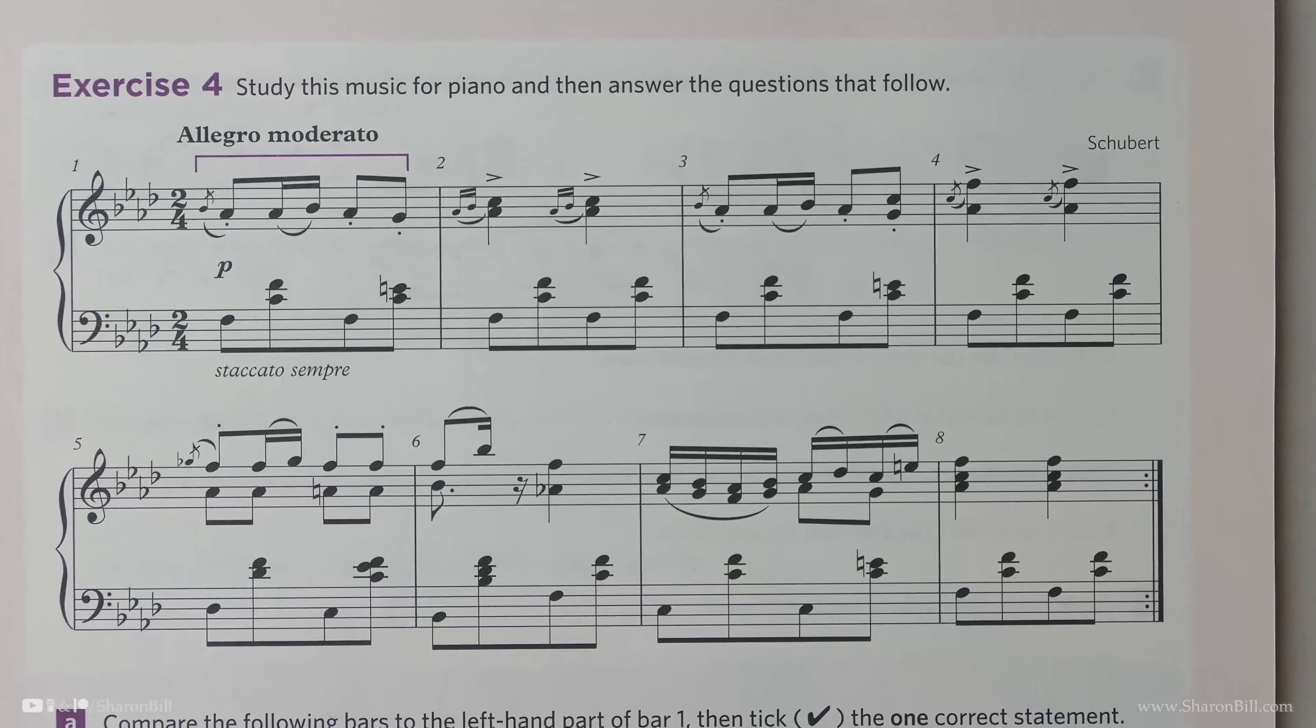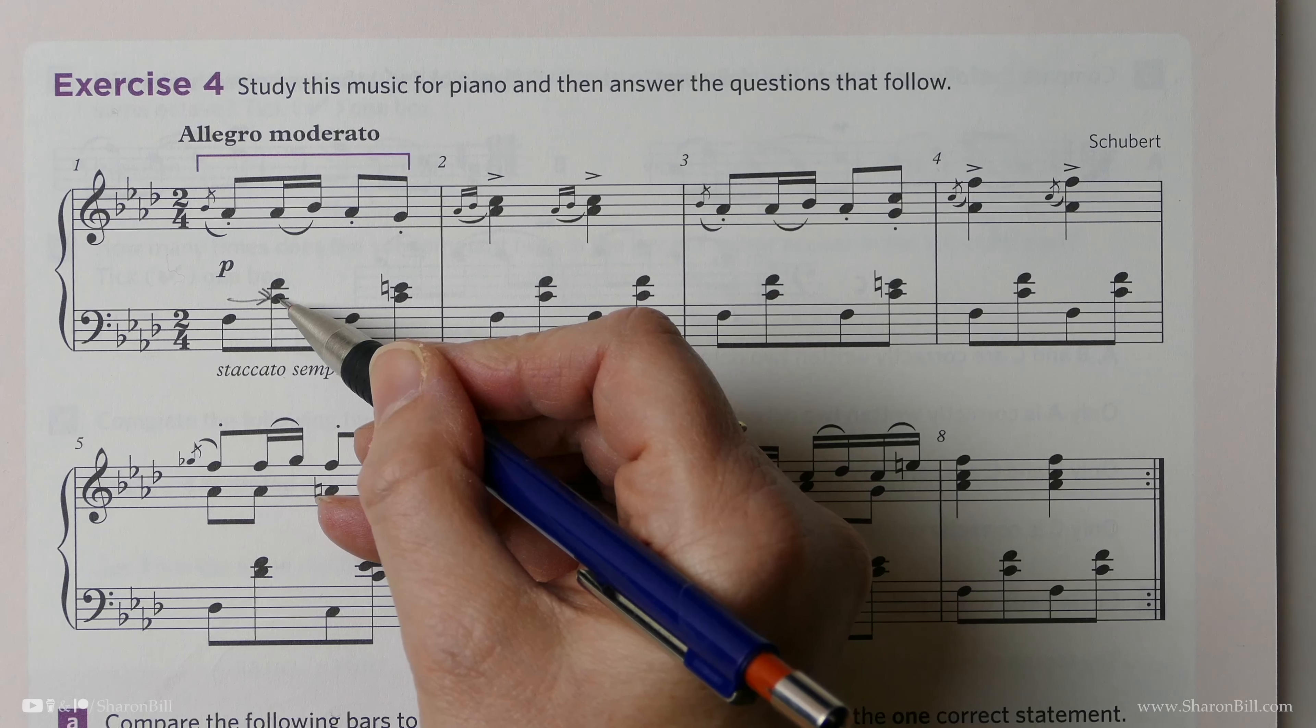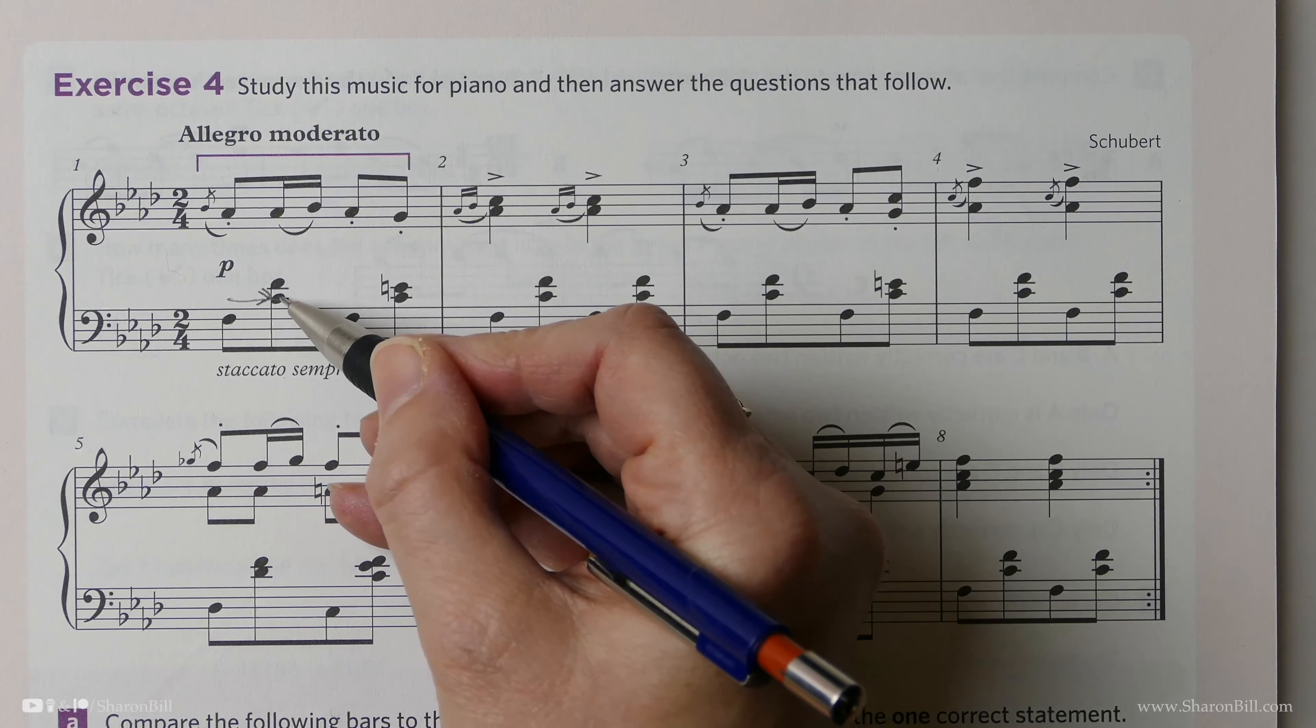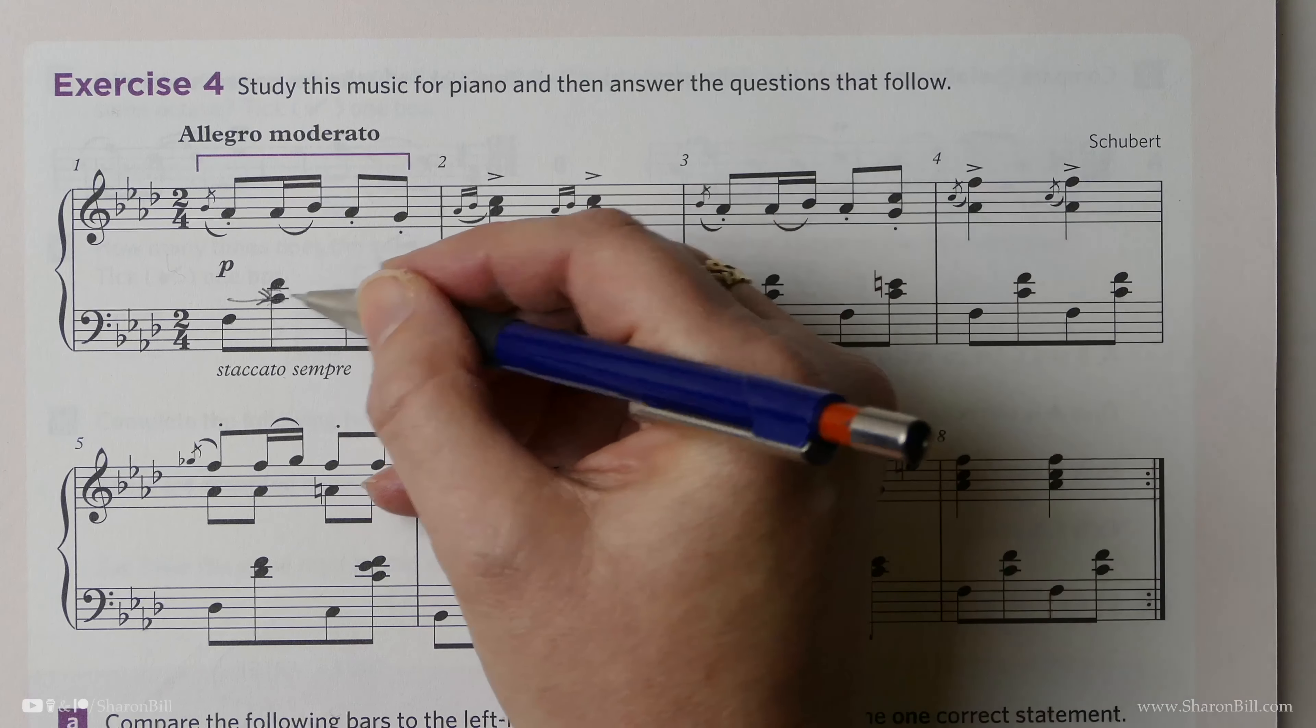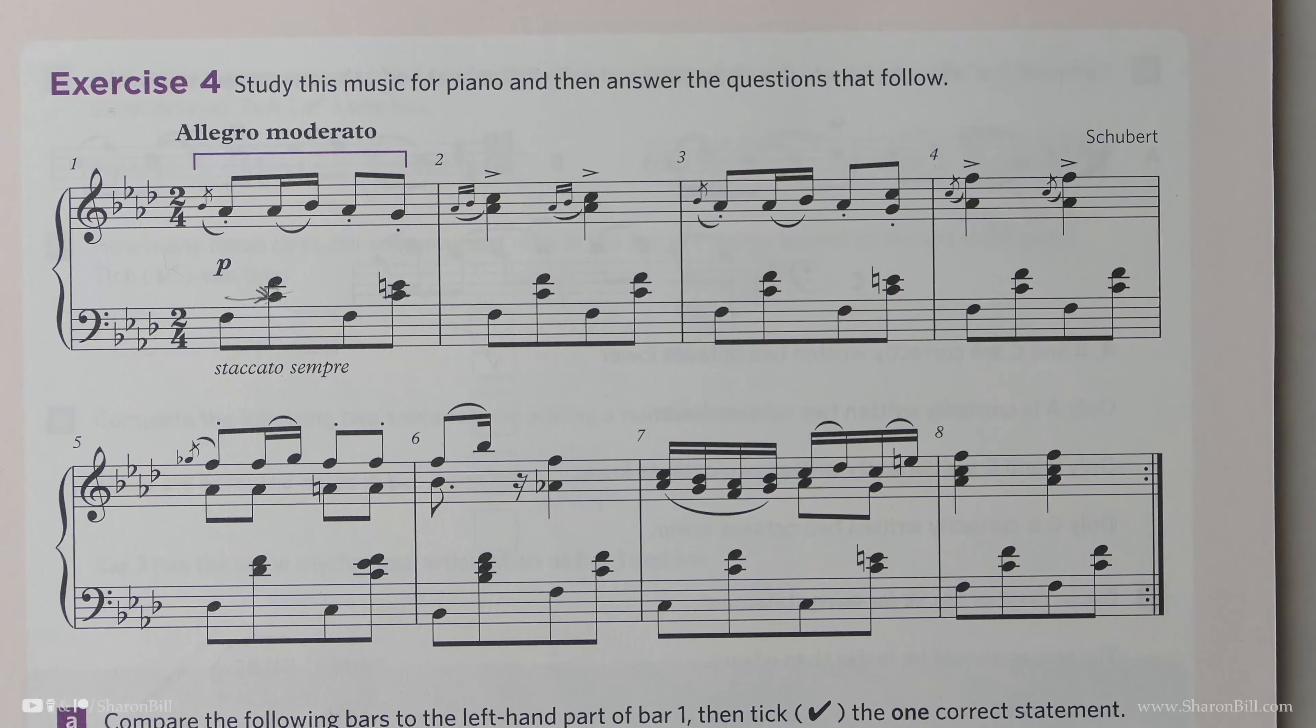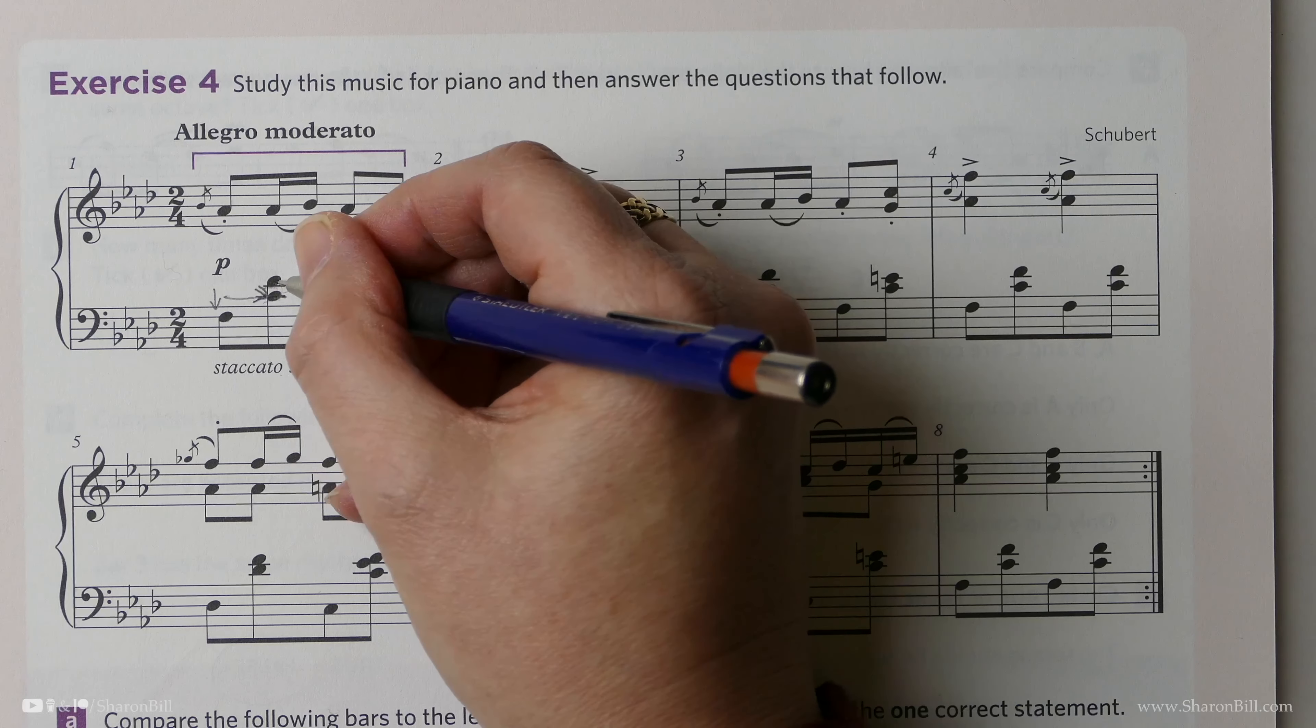Our big clue here is middle C. We can see that we begin with the F below middle C, and then we have C, D, E, and F. Middle C is our reference point here. We begin on the F below middle C, and then we're looking for middle C and the F above that.